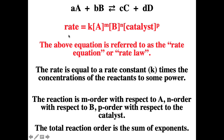Looking at the rate equation, we say the reaction is M order with respect to A — so if M is two, it's second order with respect to A. It's N order with respect to B — if N is one, it's first order with respect to B. P order with respect to a catalyst — say that's three, so third order with respect to the catalyst. The overall order is the sum of all those exponents, so M=2, N=1, P=3 gives sixth order overall.